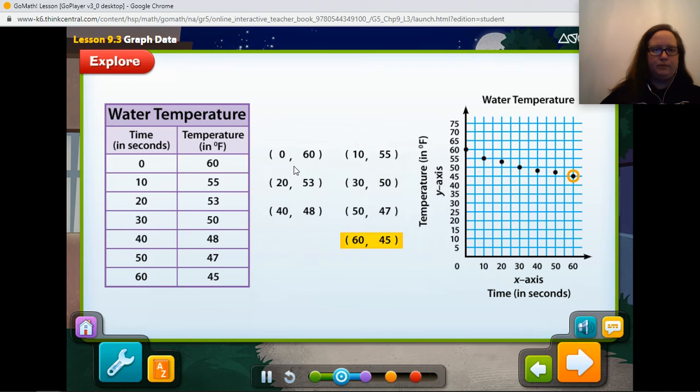Coordinate grids can be used to analyze data. Looking at the points on the grid, you can analyze the results of the experiment by observing how the temperature decreases quickly at first, and then more slowly as the experiment progresses.